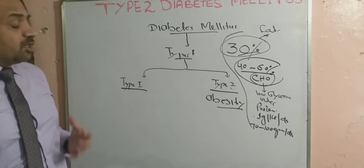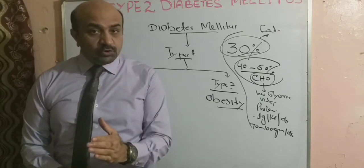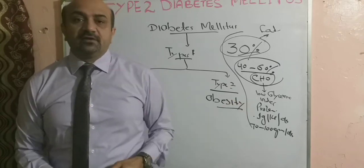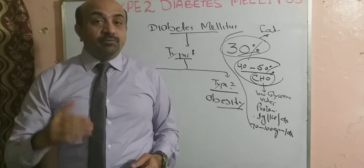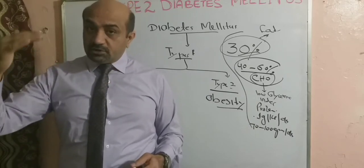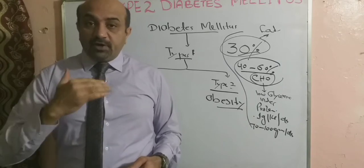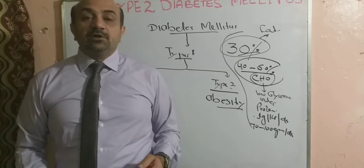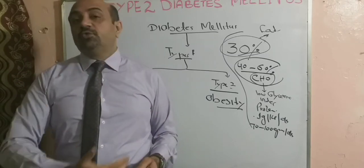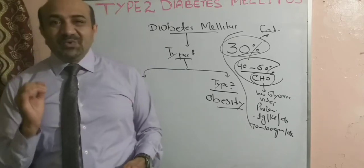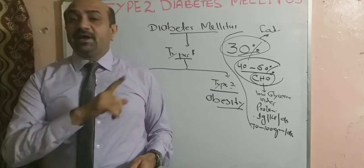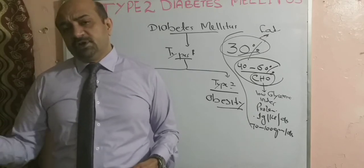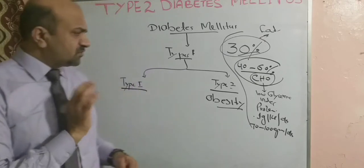One very important thing: insulin is required for the transfer of glucose from the blood to the inside of cells, but this does not happen with the brain. The brain does not rely on insulin for the shifting of glucose — it only relies on glucose directly. So whenever a person is in hypoglycemia, they will become faint or unconscious, because the brain only needs glucose for its survival and does not need insulin to shift glucose from blood to brain.